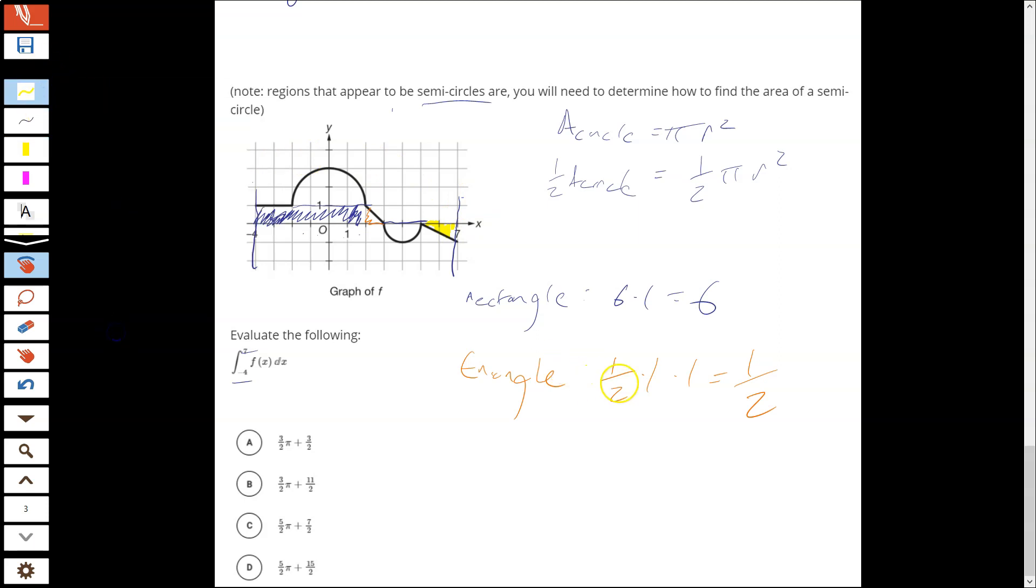And then we have this triangle over here. So that triangle has a base of 2 and a height of 1. So 1/2 times 2 times 1 is just 1. But it's below the x-axis notice, so we're going to make it negative for the area.